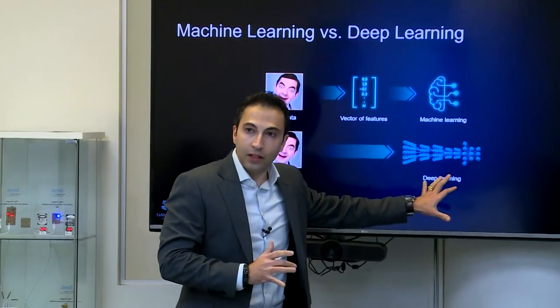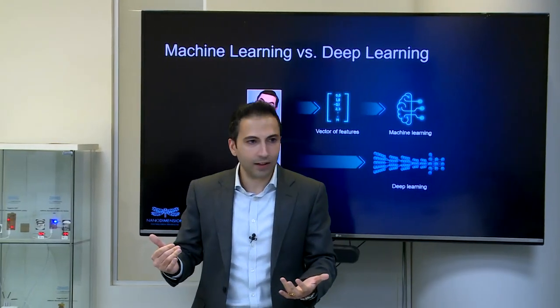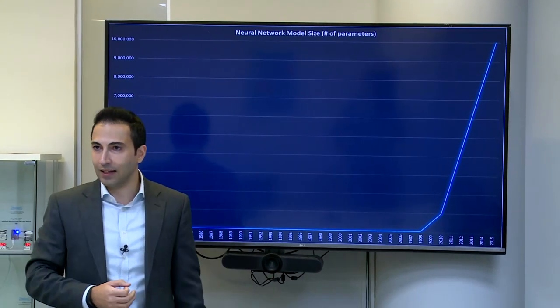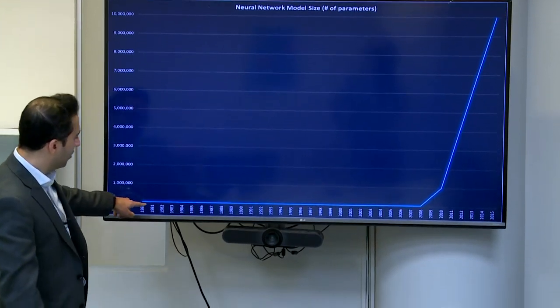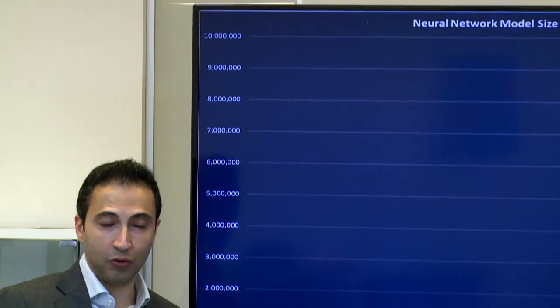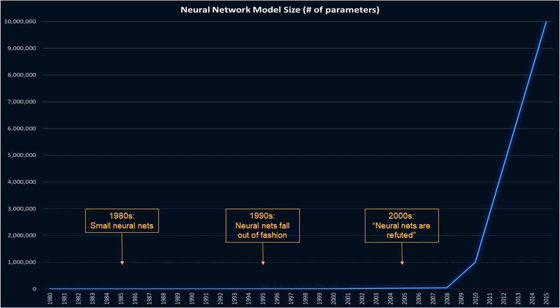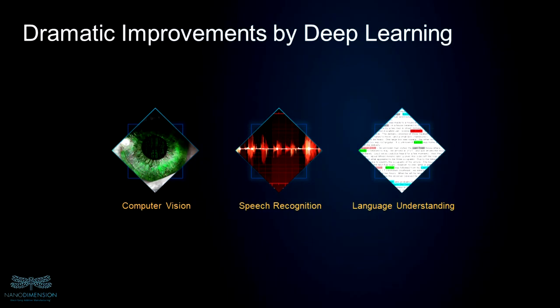Despite this breakthrough, neural networks are not a new topic — they started in the 1970s. So why the excitement right now? For decades, we couldn't train big neural nets due to various mathematical and computational reasons. In the 1980s there were some breakthroughs with small neural nets. In the 1990s they gradually fell out of fashion. In the 2000s, many considered them a completely refuted field because traditional machine learning obtained better results. Then suddenly in the 2010s, thanks to GPUs and a series of algorithmic breakthroughs, we were capable of training larger and larger neural nets with millions of connections — and we witnessed the greatest leap in performance in the history of AI.